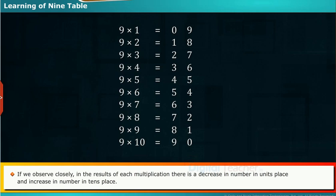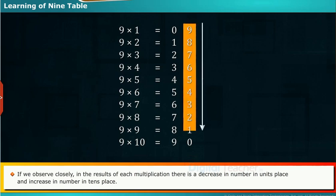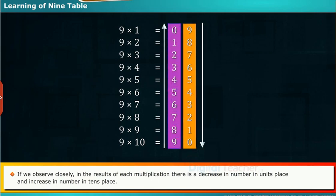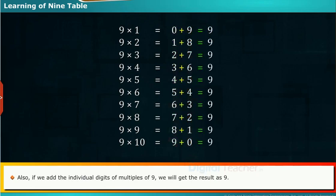If we observe closely in the results of each multiplication, there is a decrease in number in units place and an increase in number in tens place. Also, if we add the individual digits of multiples of 9, we will get the result as 9.